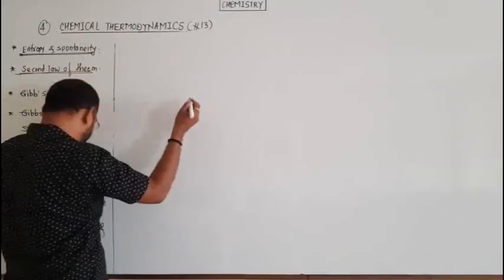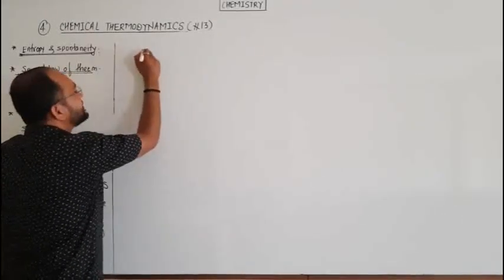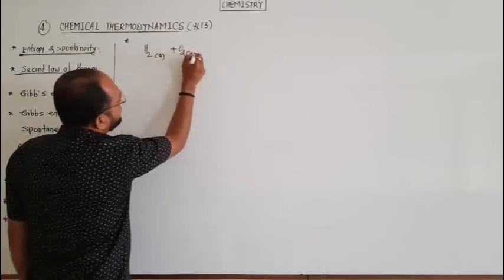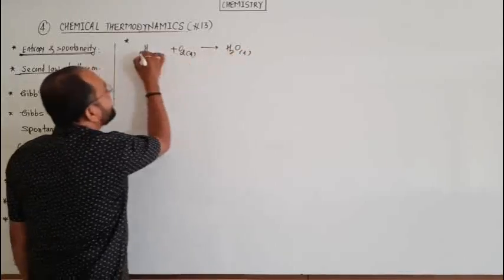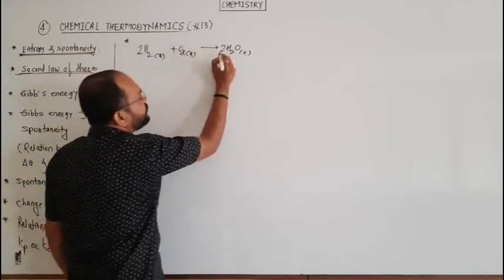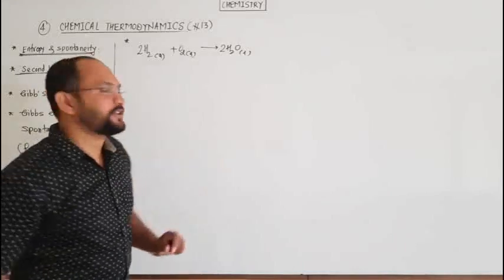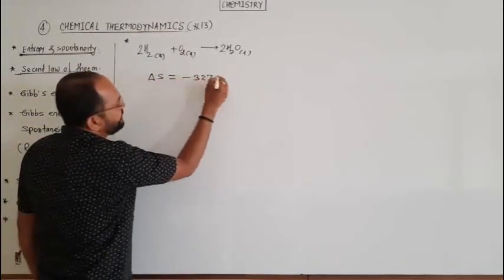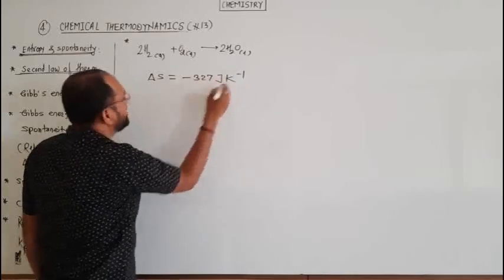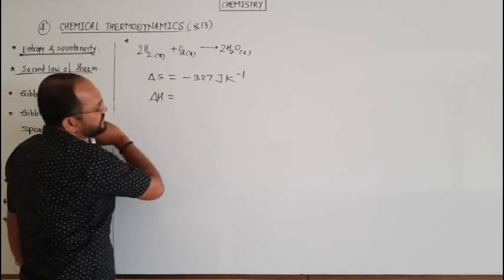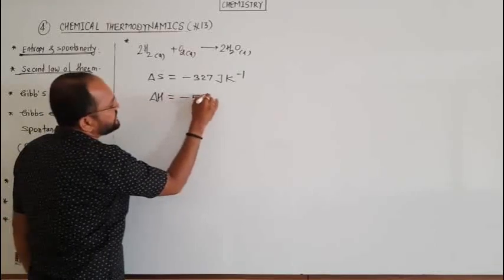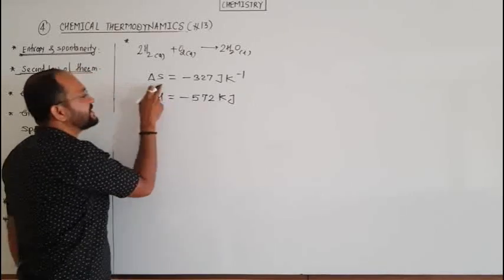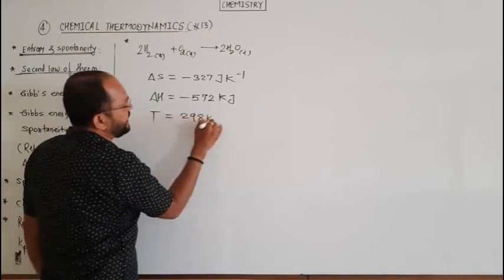Let's now consider the formation of liquid water from its elements: H2 gas plus O2 gas gives H2O liquid. For this reaction, delta S system is minus 327 joule per kelvin, and delta H for this process is minus 572 kilojoule. Both these values are at the temperature 298 kelvin. We need to find delta S total — the total entropy of the system and the surrounding.